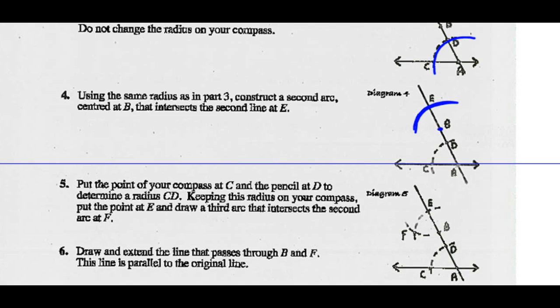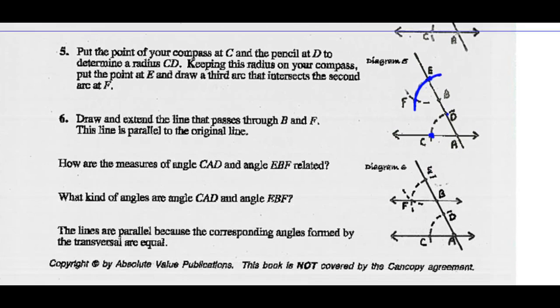Put the point of your compass at C and measure the length from C to D. Keep this radius and put that point on E, then draw this arc. It's going to intersect the arc that goes through B, and we can draw a parallel line right through points B and F. This line is parallel to our original line. We can put arrows on there to show that they're parallel lines.